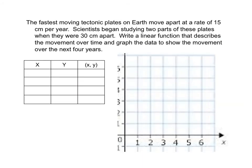Now let's look at a real-life situation. The fastest-moving tectonic plates on Earth move apart at a rate of 15 centimeters per year. Scientists began studying two parts of these plates when they were 30 centimeters apart. We want to write a linear function that describes the movement over time and graph the data to show the movement over the next four years.